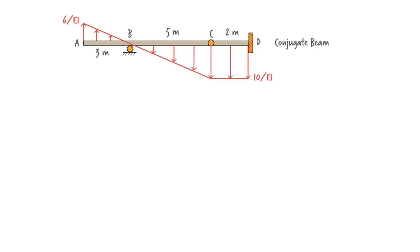Here is the conjugate beam subjected to a distributed load represented by the M over EI diagram. We want to determine the deflection of the real beam at B. Therefore, we need to calculate the internal moment at B in the conjugate beam.